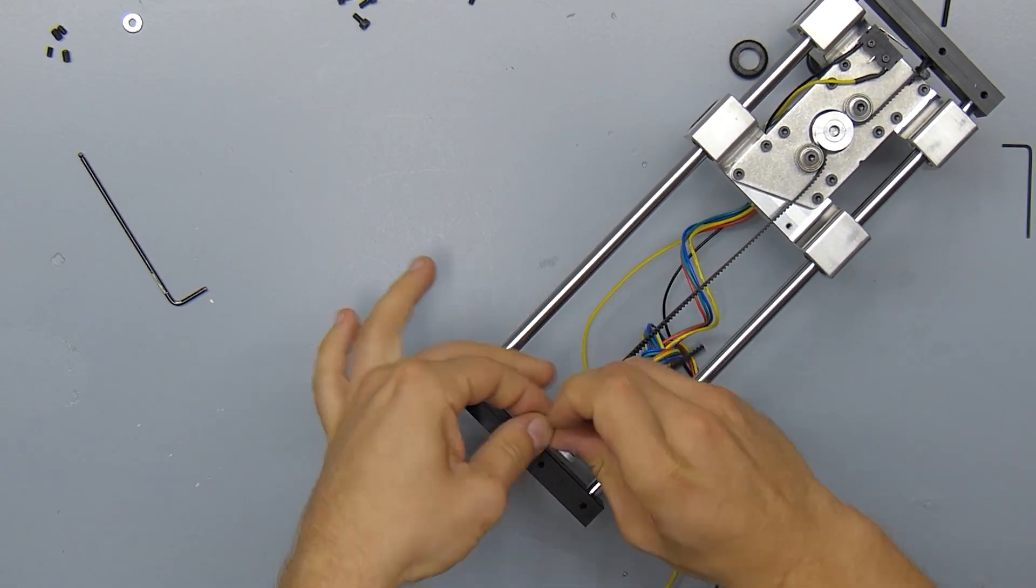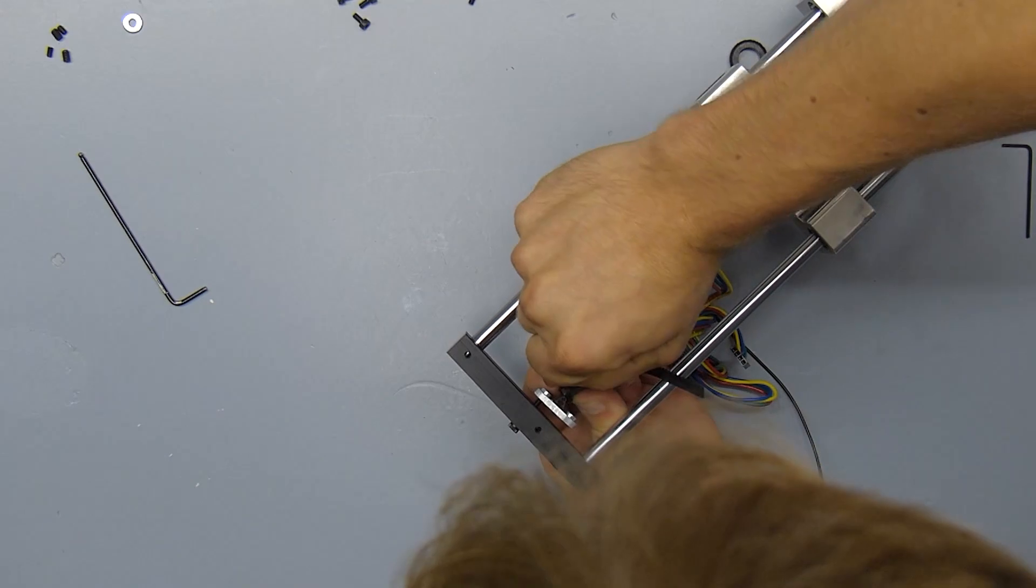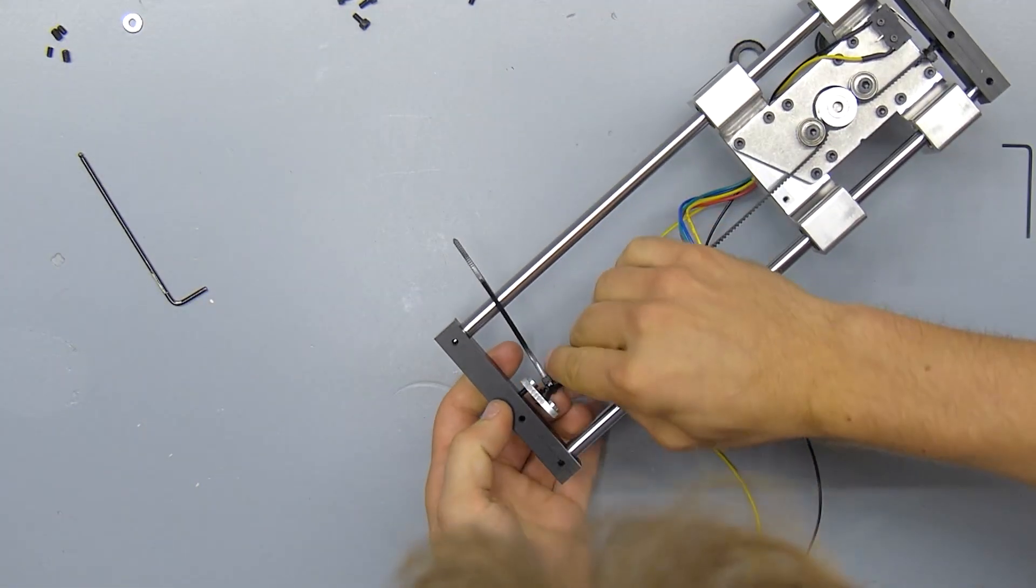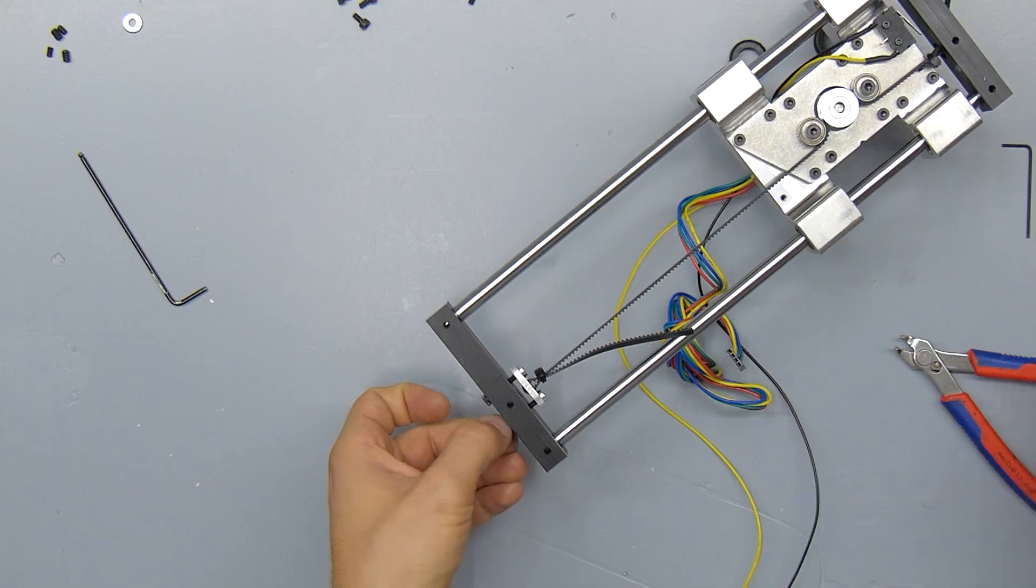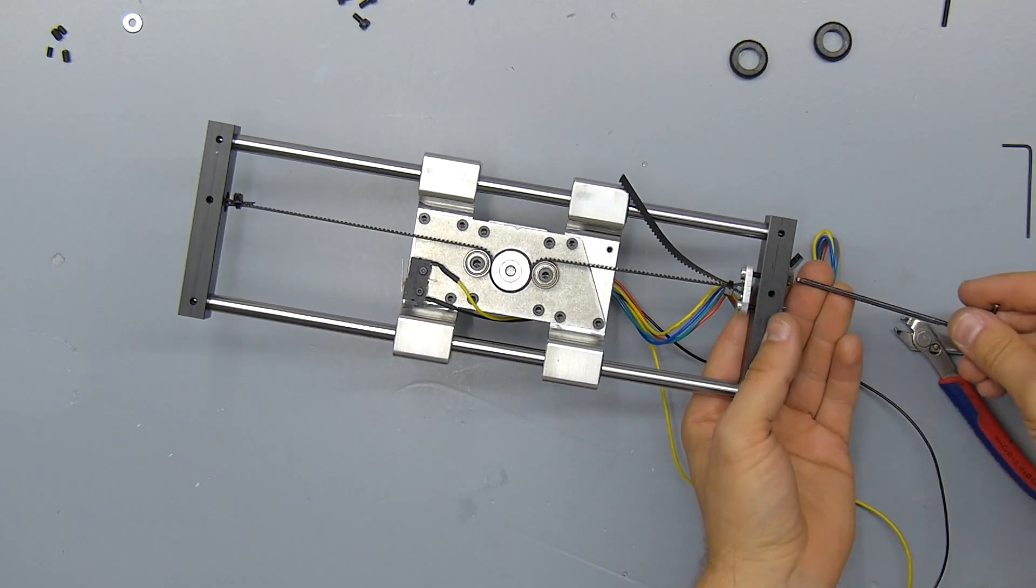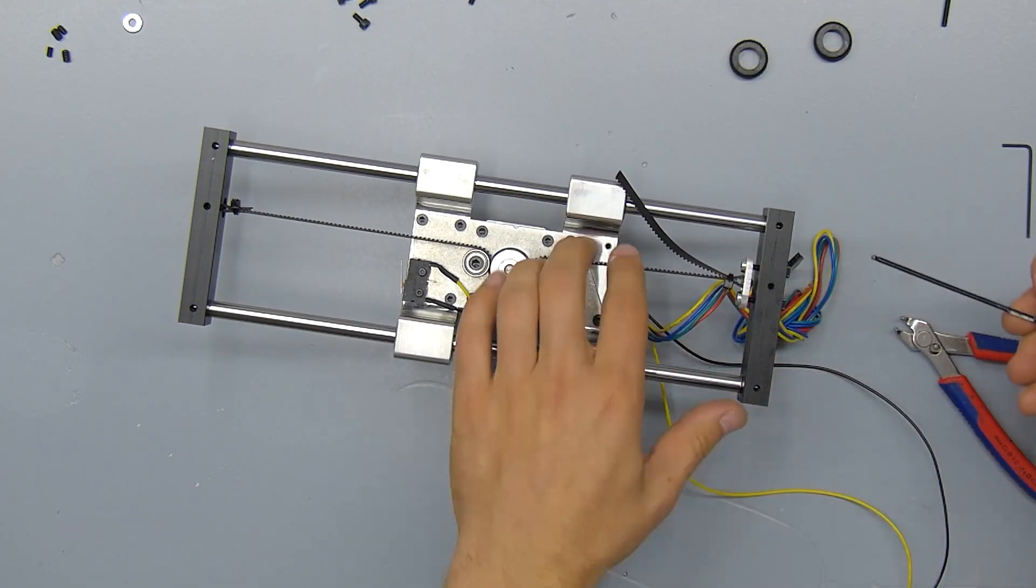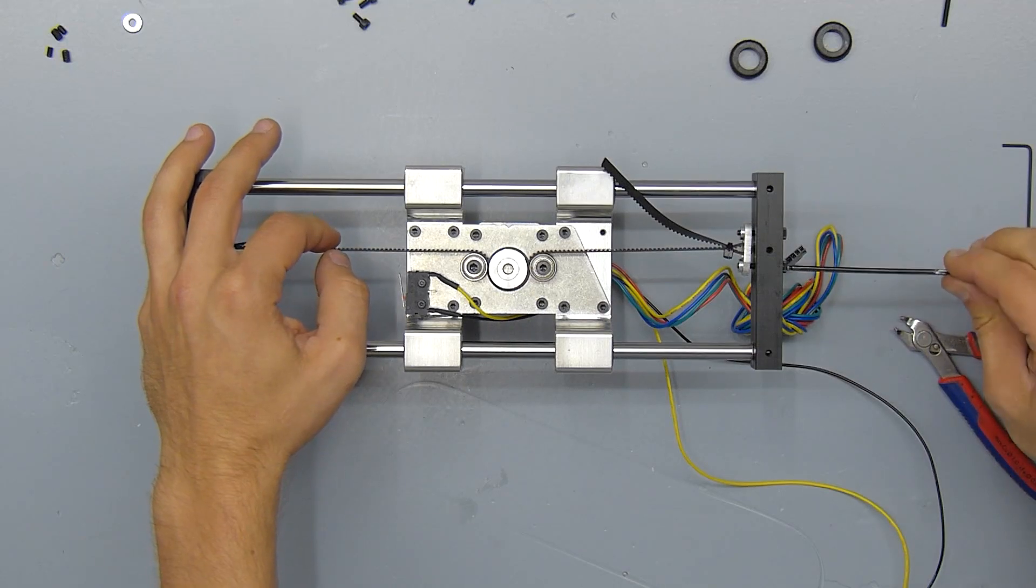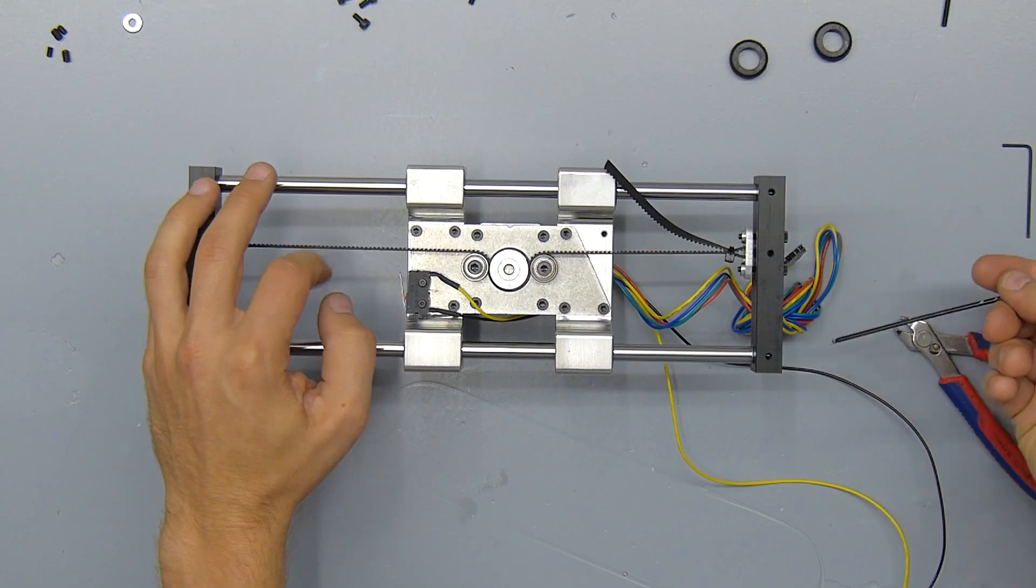Try to get this belt as tight as possible at this point, and then use the zip tie again without smashing the belt and as tightly as possible to lock the belt in place. You can then tighten the belt, and as on the x-axis, try to get any slack out of the belt.